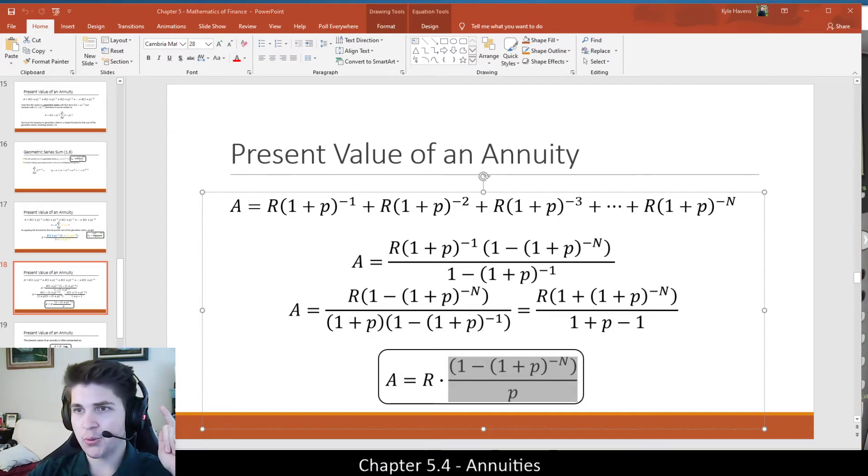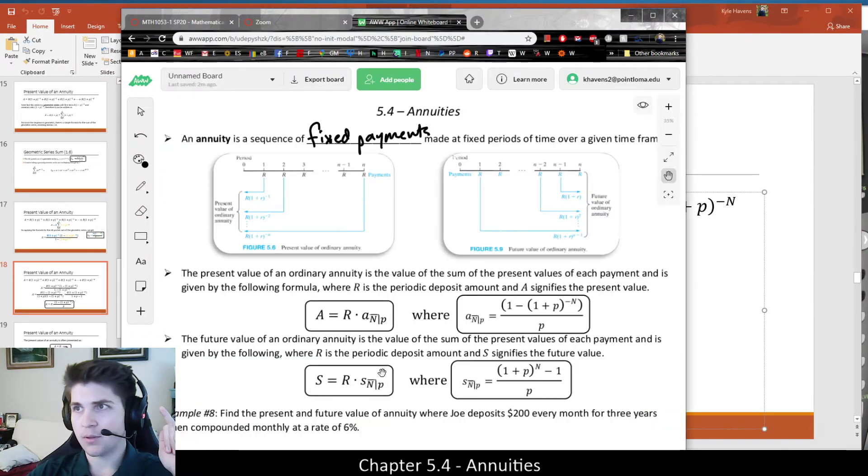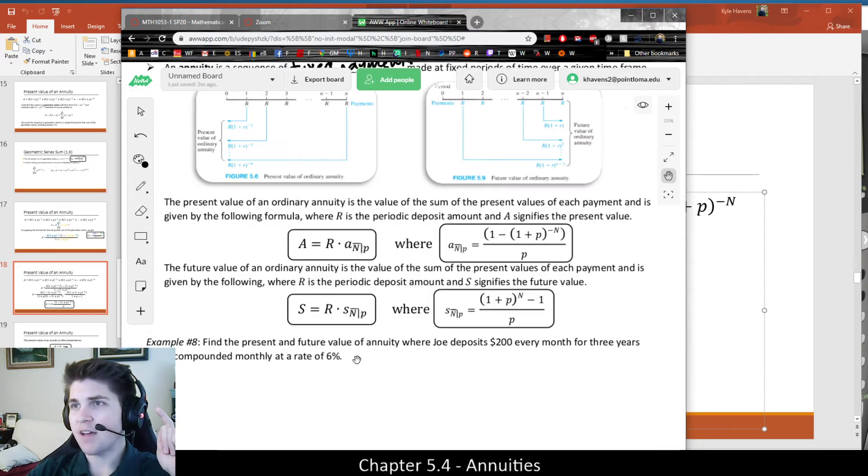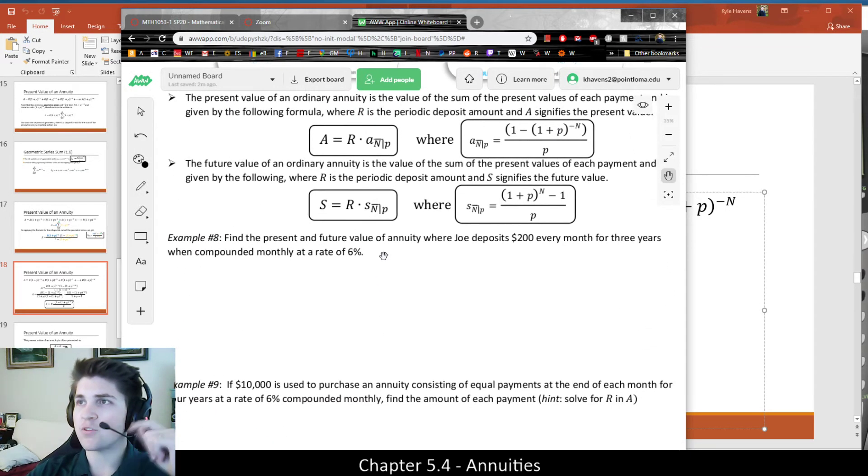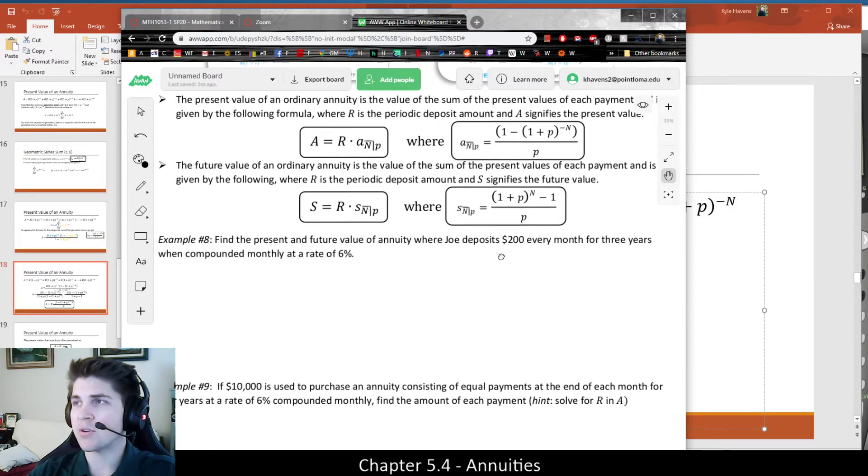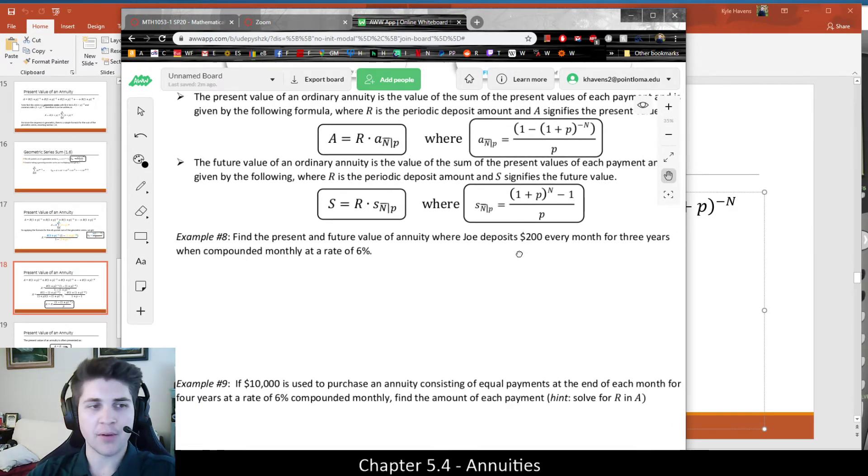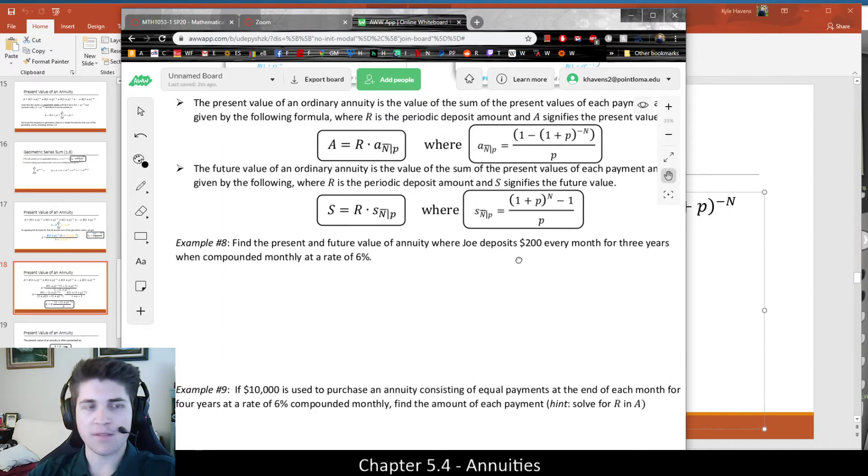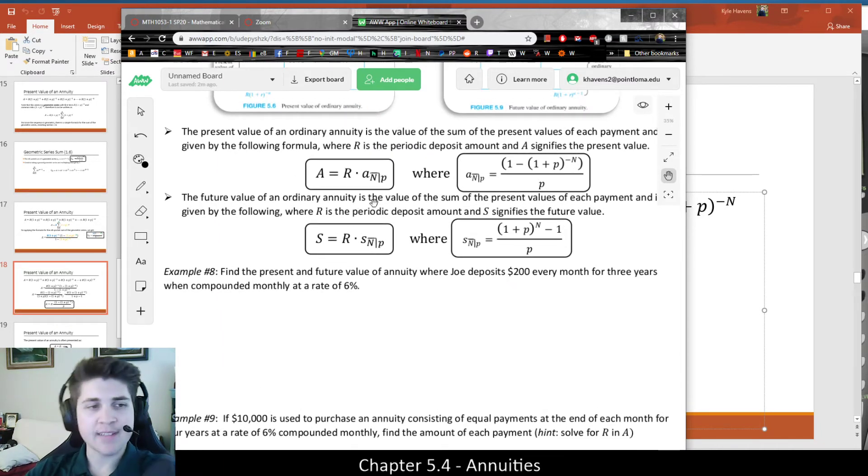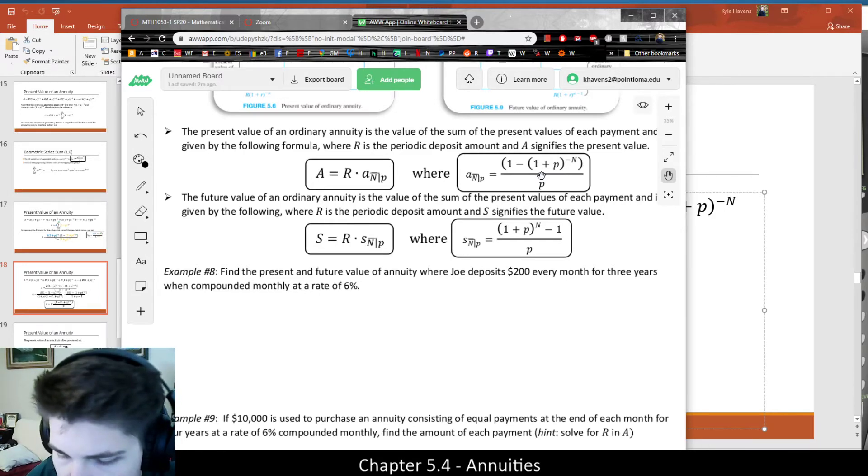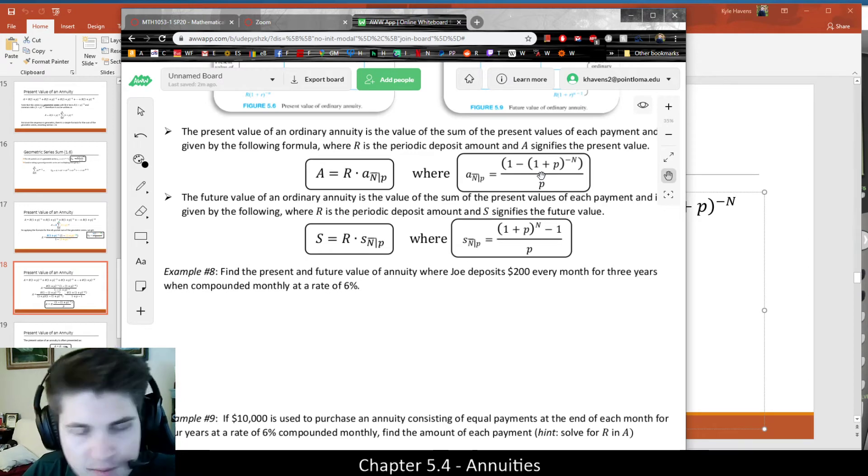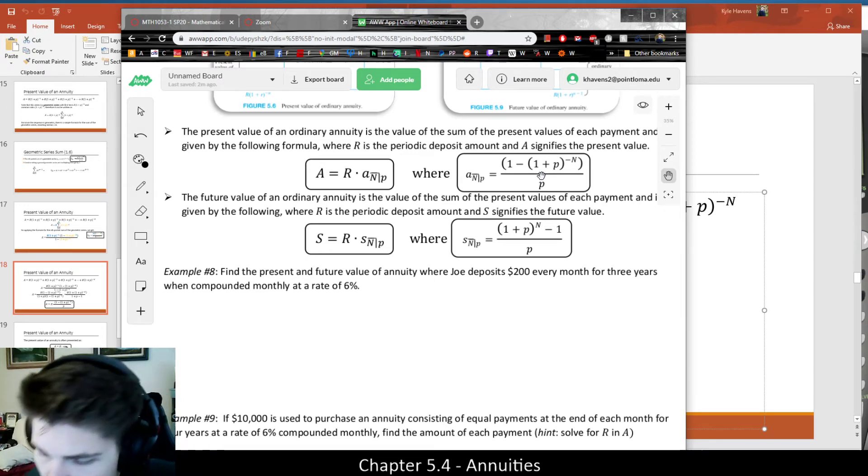So let's go back to the whiteboard and do some examples. Example 8 says, find the present value and the future value of an annuity where Joe deposits $200 every month for three years if compounded monthly at a rate of 6%. So in summary, we could really just use these formulas to do all of this work. And the whole point of the previous a million videos was to just make some sense of why. Why are these formulas, why do they make any sort of sense?